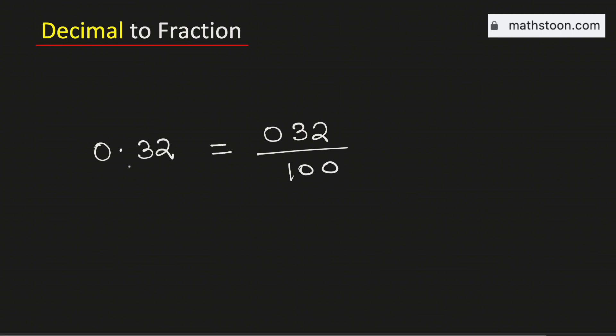We have put two zeros because there are two digits after the decimal point. Now remove the zero from the numerator. Now we will simplify this fraction.